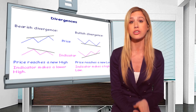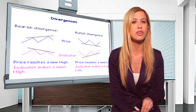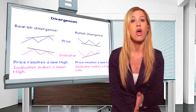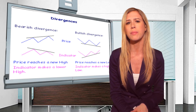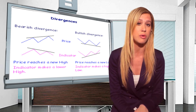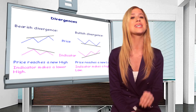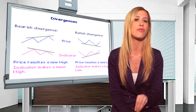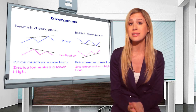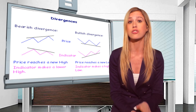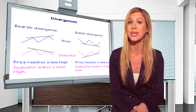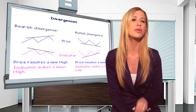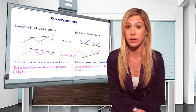Usually price divergence occurs when the strength of a trend weakens and volatility arises. Even though a price action might seem to follow the same movement, there are technical indicators that will diverge from price action. Although these technical indicators are recognizing this trend's weakening position, traders at this time hope to take advantage of a reversal.